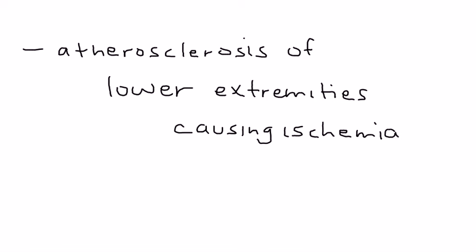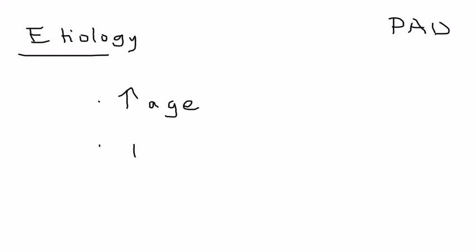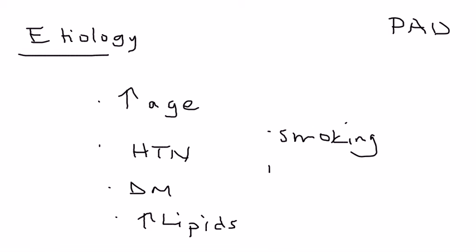The etiology of peripheral arterial disease is essentially the same etiology for coronary artery disease. Those things include increased age, high blood pressure, diabetes, high cholesterol levels, smoking, positive family history for this type of condition, and obesity as well. So the same reasons why somebody would have coronary artery disease are the same reasons why someone would have peripheral arterial disease.